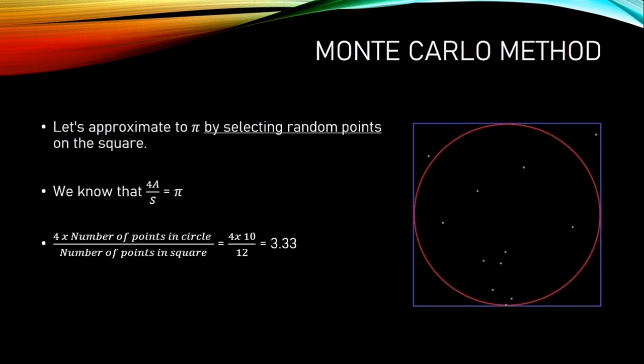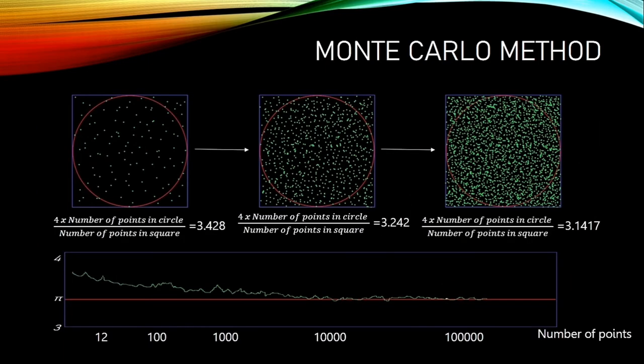Let's approximate to pi number by selecting random points on the square. We know that 4 times area of the circle divided by area of the square equals π. So, 4 times number of points in circle divided by number of points in square should give us π number or should approximate us to π number. As we increase random points in the area, we are getting closer to the pi number.